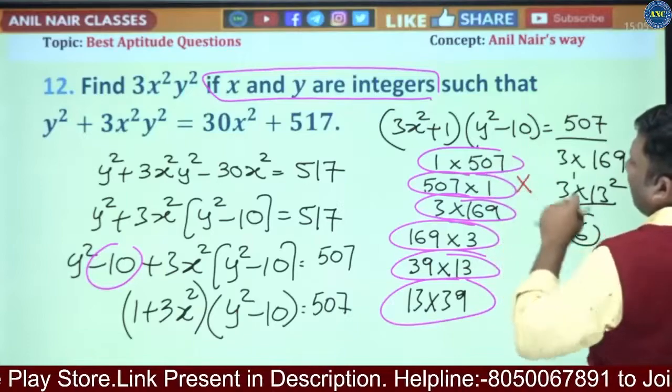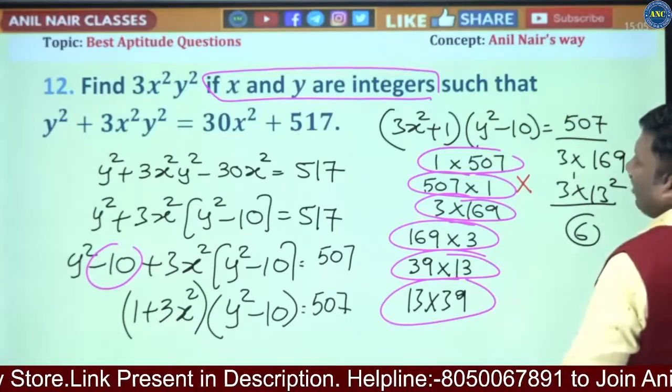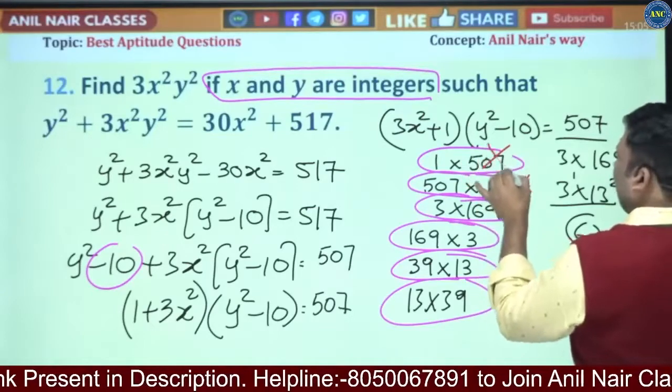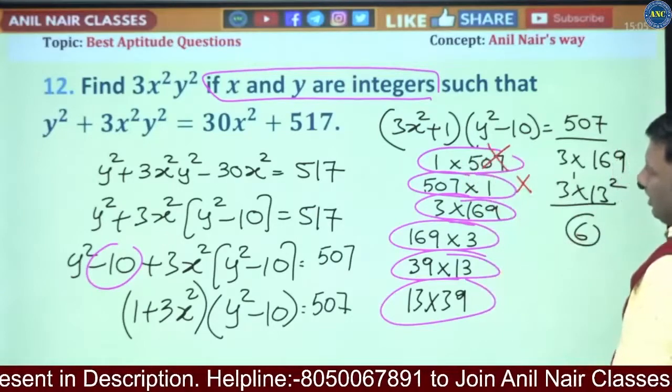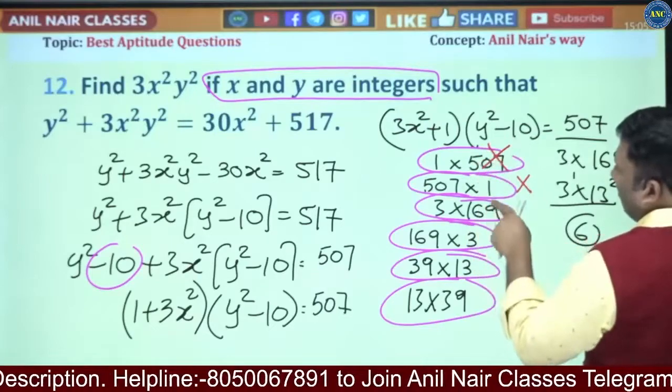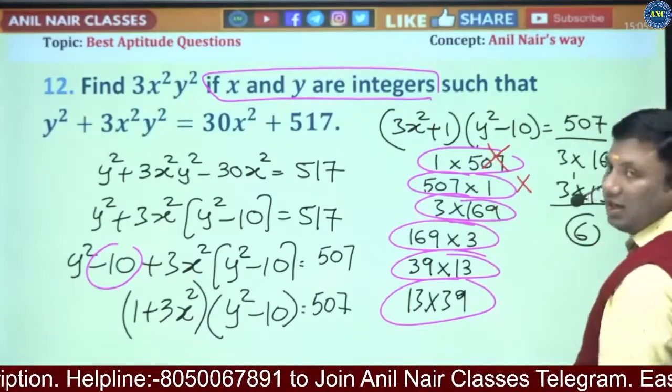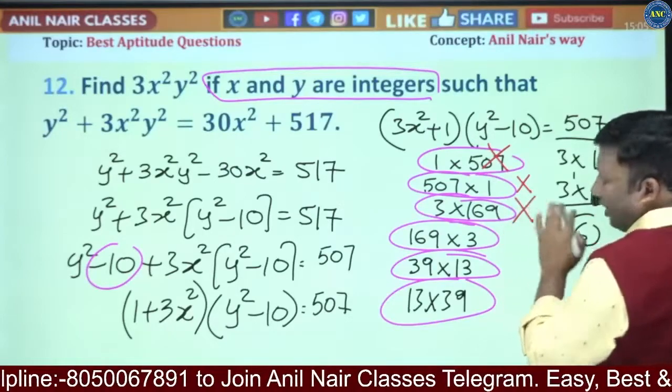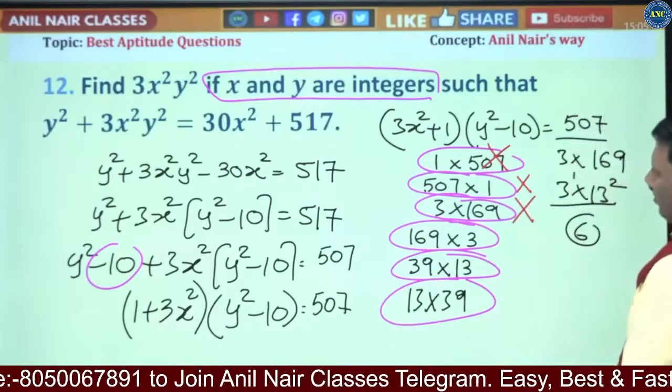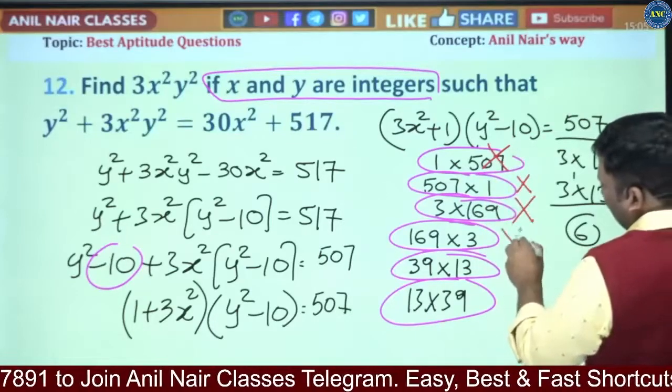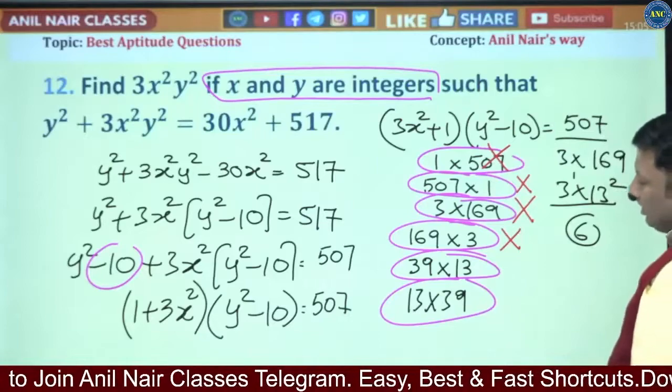y² - 10 = 507, y² will become 517. Any perfect square can never end with 2, 3, 7, or 8. Not possible. Next one: y² - 10 = 169, y² will become 179. Any perfect square ending with 9, the 10th place should be even. Not possible. y² - 10 = 3, so y² is 13. Not possible.